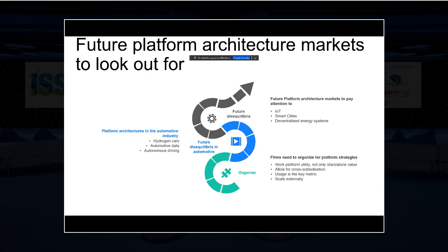Platform theories can help understand the transformation in a lot of other future disequilibria in industries. A lot of the same strategies or characteristics will be seen if we are talking about hydrogen cars — building out the refueling network for hydrogen cars is basically exactly the same story as for EVs. We will see that for automotive data, autonomous driving, and also a lot of other industries currently in equilibrium or in transformation that would profit from a platform perspective — namely IoT, smart cities, decentralized energy systems — where it helps a lot to understand how platform architecture markets perform and what you can learn from the strategies that exist there.